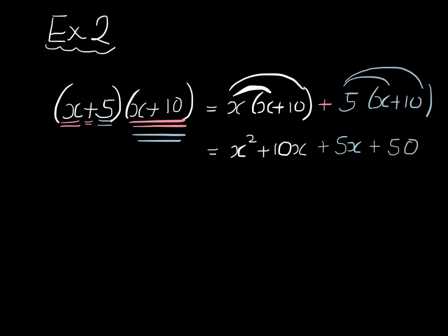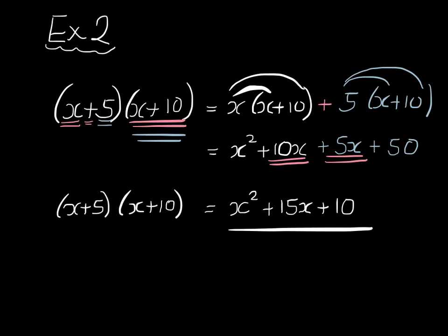Now we just collect like terms. We've got a 10x here and a 5x here. They combine to 15x. So we have our answer, x squared plus 15x plus 50. And we're done. This is the expansion of the double brackets, x plus 5 multiplied by x plus 10.